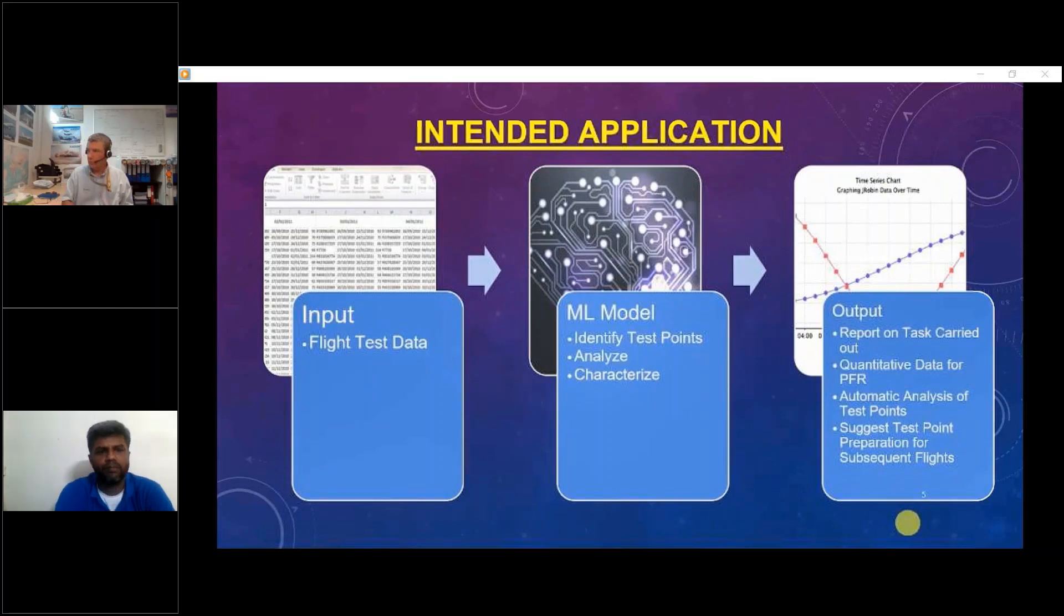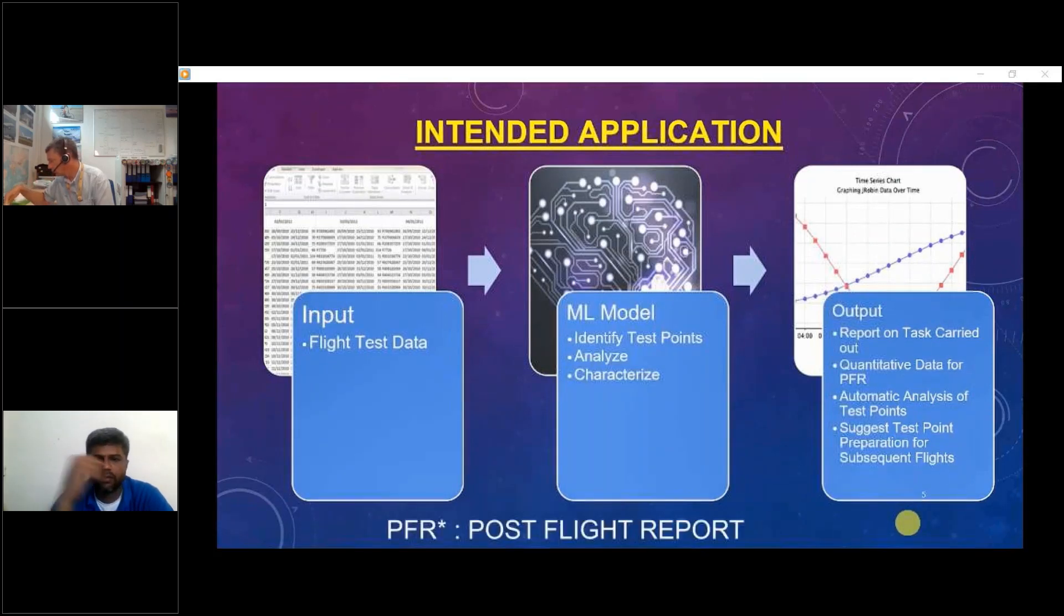With this background, I set out to do a ML model which will do this intended application. The model should input the flight test data, that is the CSV file or the Excel file becomes an input for the ML model. The model identifies the test points automatically, analyzes it and characterizes it. The output which I expect the model to give is the report on the task which we carried out in air. It should give quantitative data for generating the PFRs. You all will agree that writing PFRs is a cumbersome task for a test crew.